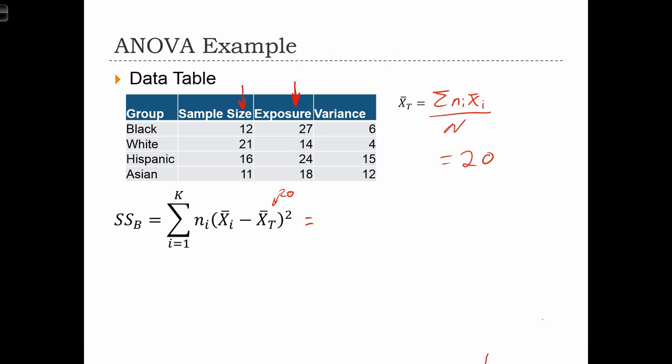So this is equal to the sample size of group 1, 12, and then we've got 27 minus 20, so 7 squared, plus 21 times 6 squared, plus 16 and then 24 minus 20 squared, plus 11 times 2 squared. And this is equal to 1644.